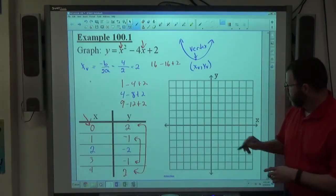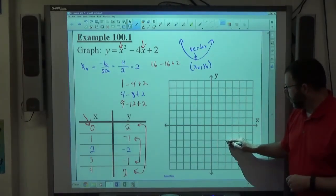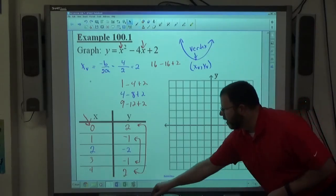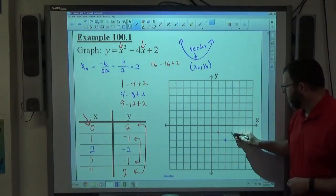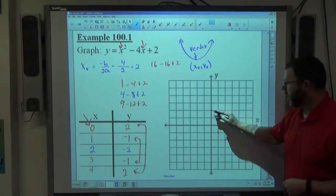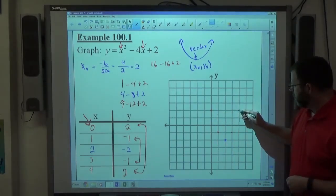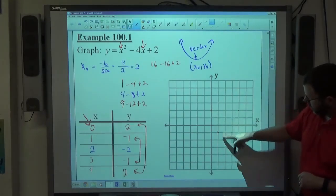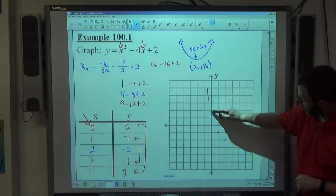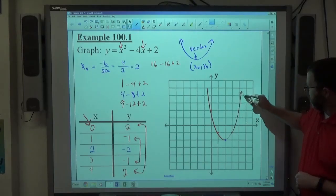So now, if I plot my points, 2, negative 2 is right here. That's my vertex. If I plot 1, negative 1 and 3, negative 1 and 0, 2 and 4, 2, you can see there's that shape that we're looking for, right? And so it just continues going that way and there's your parabola.